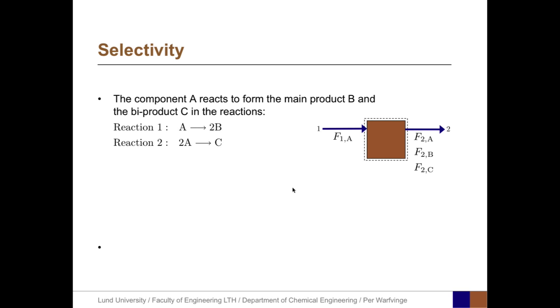Now it's time to define the selectivity. Again, let component A react to form the main product B and the byproduct C, just as before. So the selectivity is defined as the ratio between the molar output flux of B and the molar output flux of C. However, this is a simplification and builds on the fact that neither B or C are present in the input.